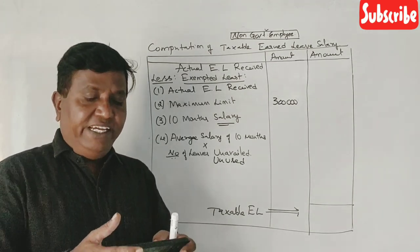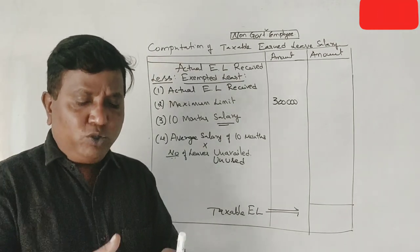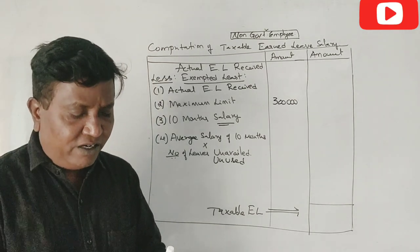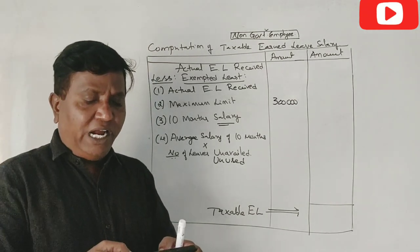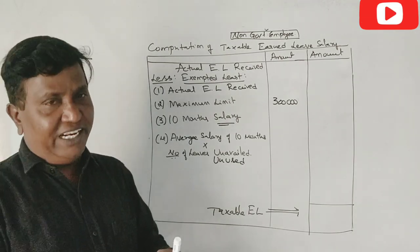He had 7 months of leave to his credit on the basis of 30 days per year, which was approved and he was paid 54,600 as earned leave salary.